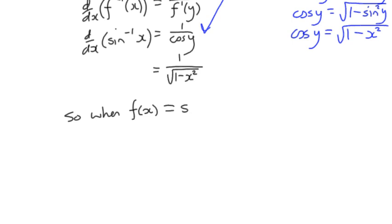f(x) equals the inverse sine of x. So the derivative is 1 over the square root of 1 minus x squared. And that becomes one of our standard derivatives.